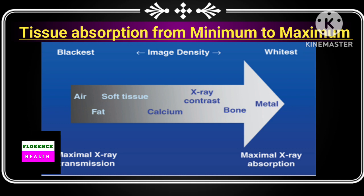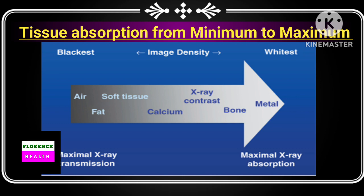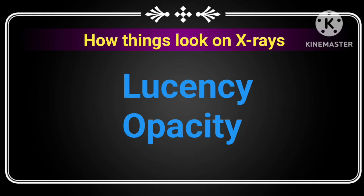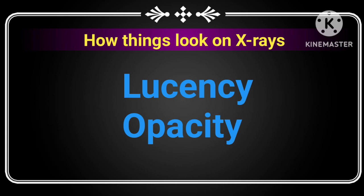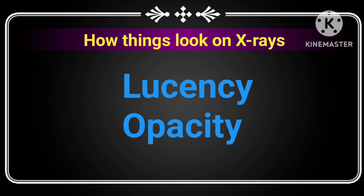Since air has the least density, it has minimum tissue absorption and is radiolucent. Metal has maximum density and maximum X-ray absorption, so metal is radiopaque. Air has maximal X-ray transmission while metal has maximal X-ray absorption. The organ toward the blacker side is radiolucent or radiotransparent, and the organ toward the white side is radiopaque.